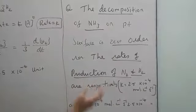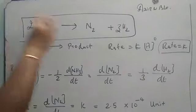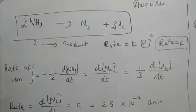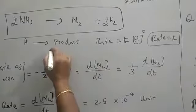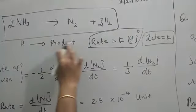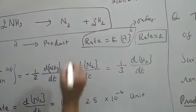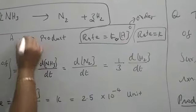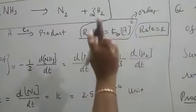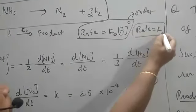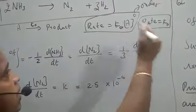First, let us write the balanced decomposition equation of ammonia: 2NH₃ → N₂ + 3H₂. The general representation is A → products. The rate law is: rate = K × [A]⁰. For a zero order reaction, [A]⁰ = 1, so rate = K₀, the rate constant. This means for a zero order reaction, rate is equal to the rate constant. This is the first key knowledge point.